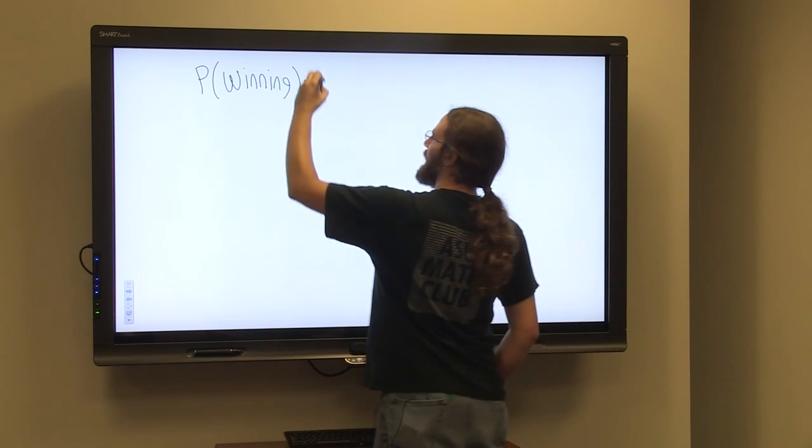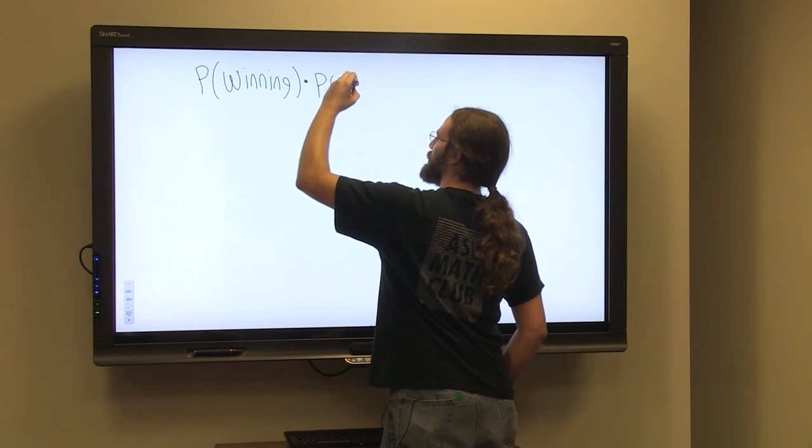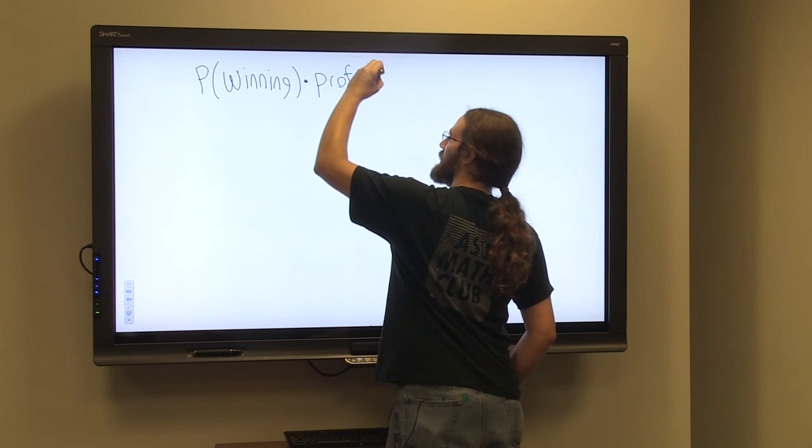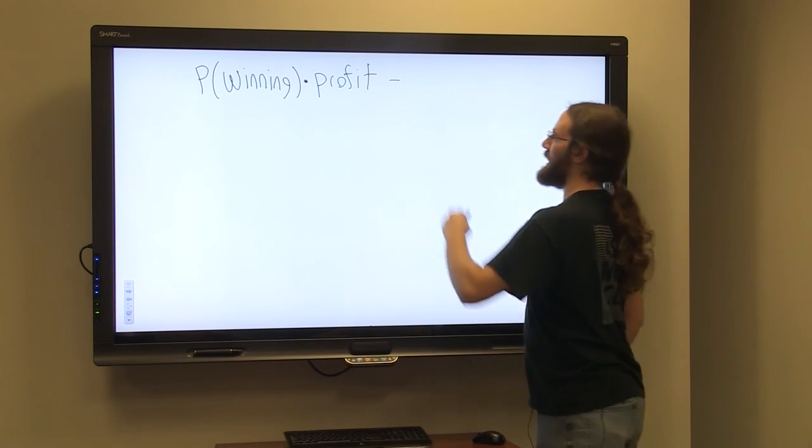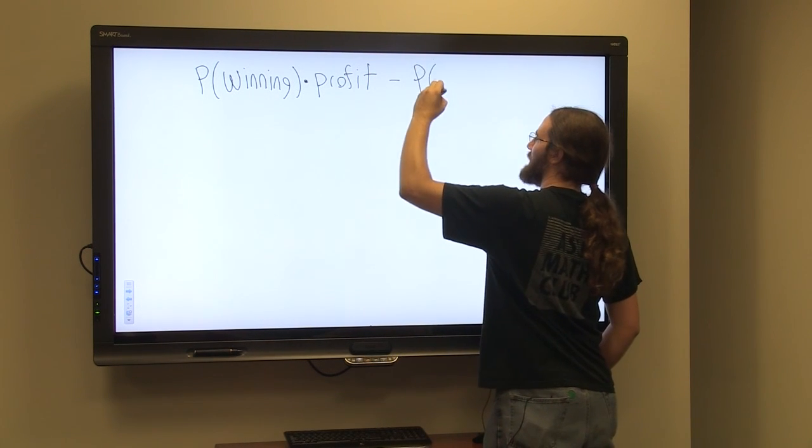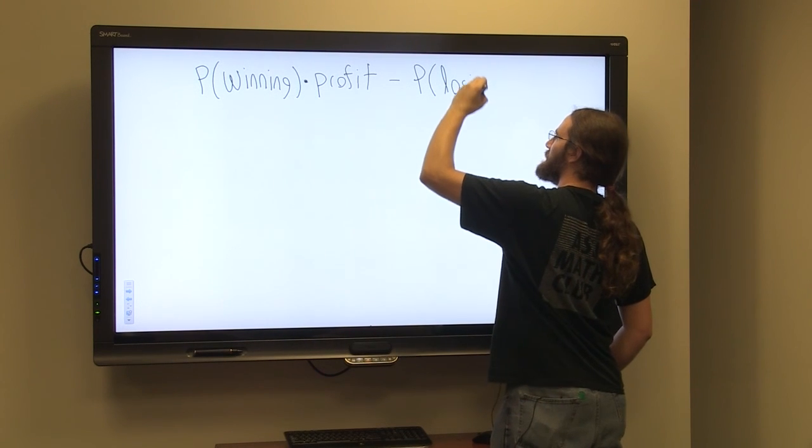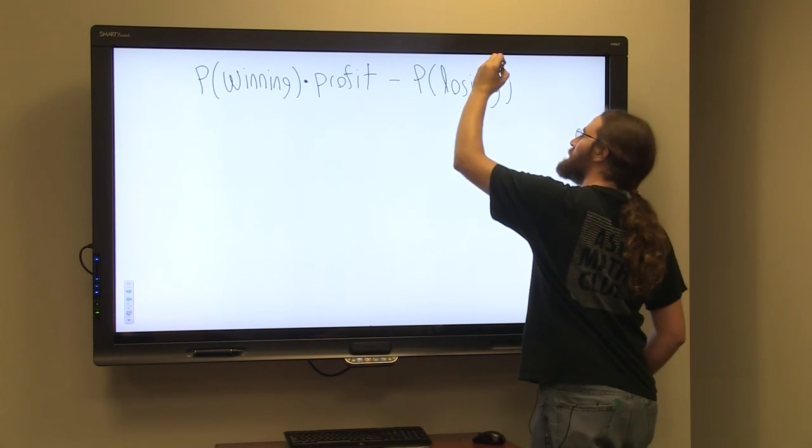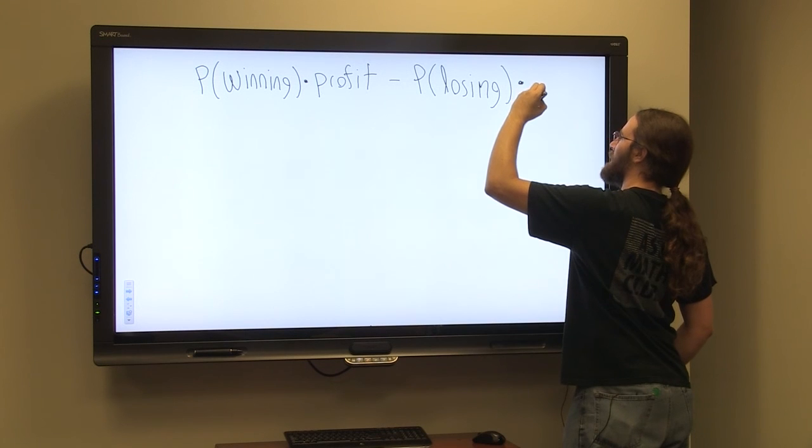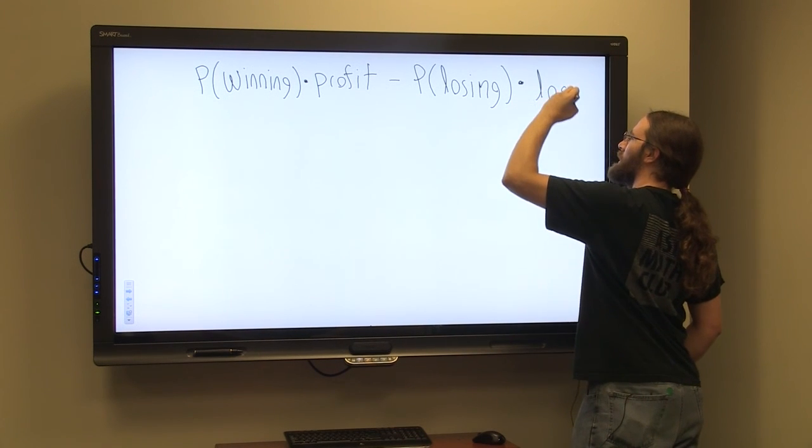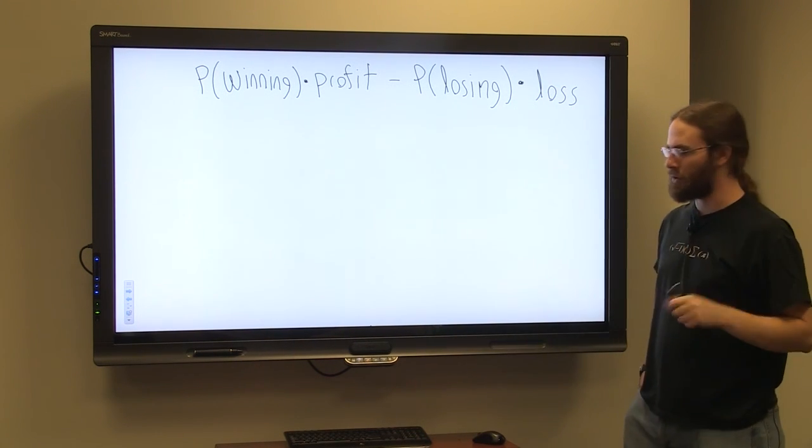So not how much you win, but how much you profit from your winnings. And then subtract from that the probability of losing times how much you lose, your loss.